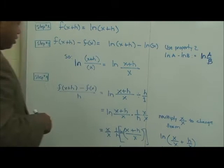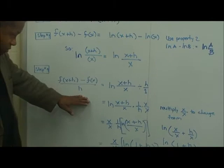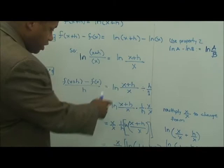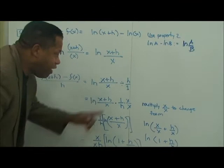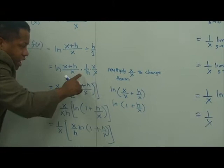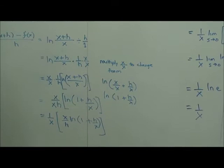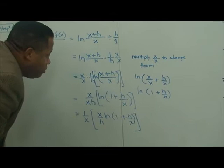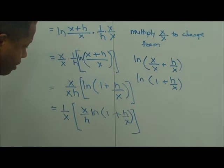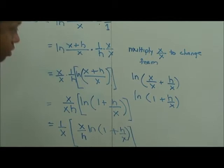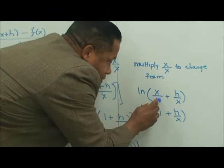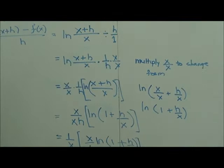Step four: we take this expression and divide by h. So we have the natural log of x plus h over x, divided by h over 1. Taking the reciprocal, we multiply by 1 over h. We then multiply by x over x — which equals 1 — to change the form. This gives us x divided by x times h, times the natural log of 1 plus h over x. So we have x divided by x, which is 1, plus h over x.